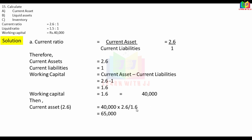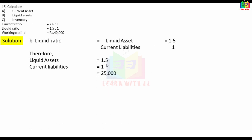Current liability is 1, and its value is 25,000. Now, liquid ratio is 1.5:1. Liquid assets are current assets minus inventory. Liquid asset is 1.5 and current liability is 1. The value of 1 is 25,000. So 1.5 value by cross-multiplication is 37,500.